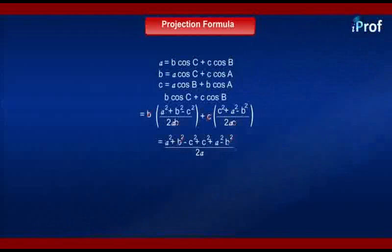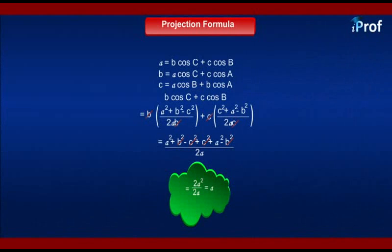B² cancels, as does C². We are left with 2A² in the numerator and 2A in the denominator, which simplifies to A.